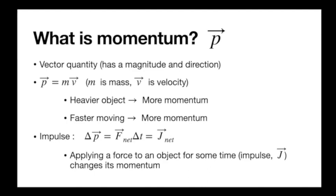The way forces change momentum is this equation: ΔP = F_net · ΔT. Both ΔP and F_net are vectors, and since F_net times ΔT (a scalar) gives ΔP, they point in the same direction. This is always true when one vector equals another vector times a scalar — they share direction. Similarly, momentum and velocity point in the same direction; multiplying by mass just stretches the arrow without changing its direction.